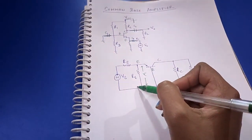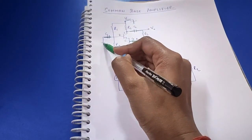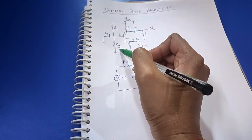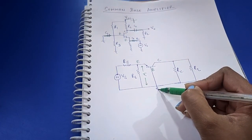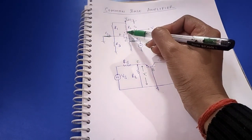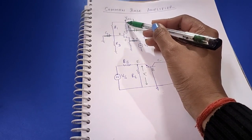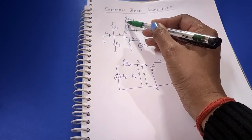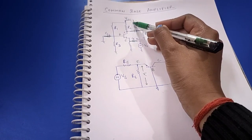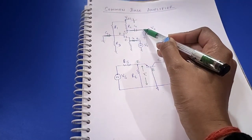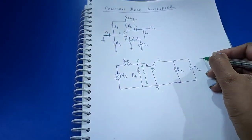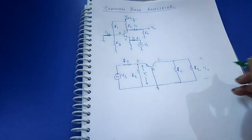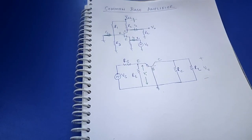The base is directly grounded — these two resistances are also shorted, so the base is directly shorted to ground. At the collector terminal, the collector resistance RC is connected to ground and the load resistance RL is also connected in parallel with it. The output voltage is taken here. That's how we draw the AC equivalent circuit.